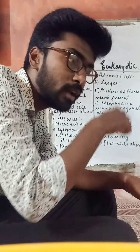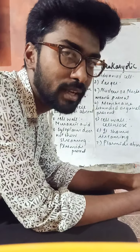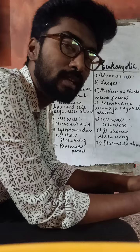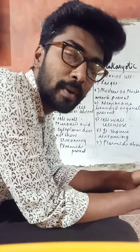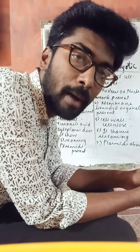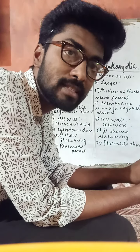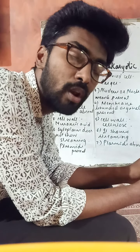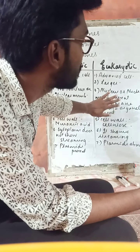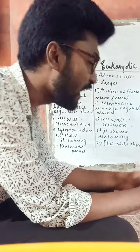Ninth point: respiratory enzymes in prokaryotic cells are present in the inner folding of the plasma membrane, called the mesosome. In eukaryotic cells, the respiratory enzymes are present in the mitochondria, because mitochondria play an important role in providing energy.